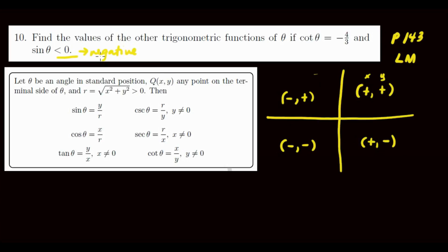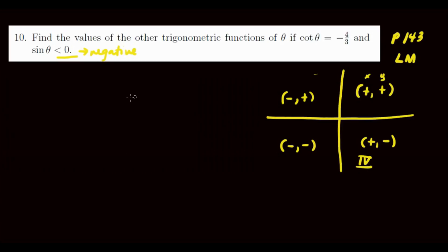Now, where is the other condition satisfied? We want sine to be negative. Sine is negative in quadrant four. So the angle theta we're looking for is in quadrant four.